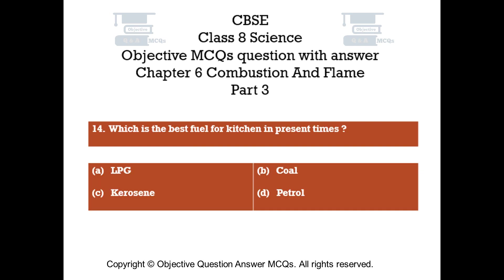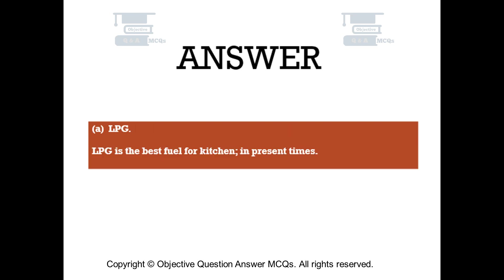Question number 14. Which is the best fuel for kitchen in present times? Option A LPG, Option B Coal, Option C Kerosene, Option D Petrol. The right answer is Option A — LPG. LPG is the best fuel for kitchen in present times.